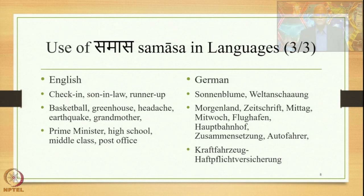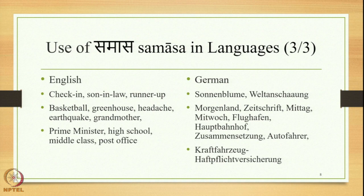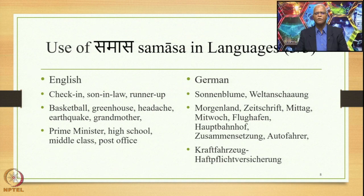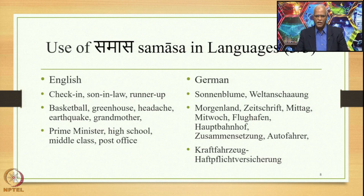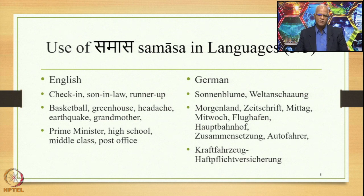This phenomenon is also present in several languages across the globe. In English, for example, there are three types of compounds: hyphenated compounds like chicken, son-in-law, or runner-up; single-unit compounds like basketball, greenhouse, headache, earthquake, and grandmother; and open compounds like prime minister, high school, middle class, and post office — two words separated but acting as one unit.